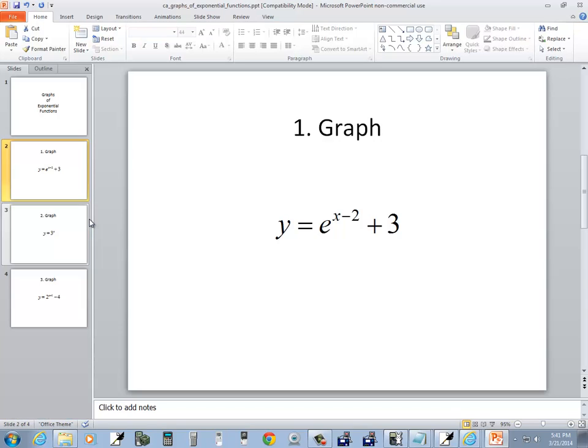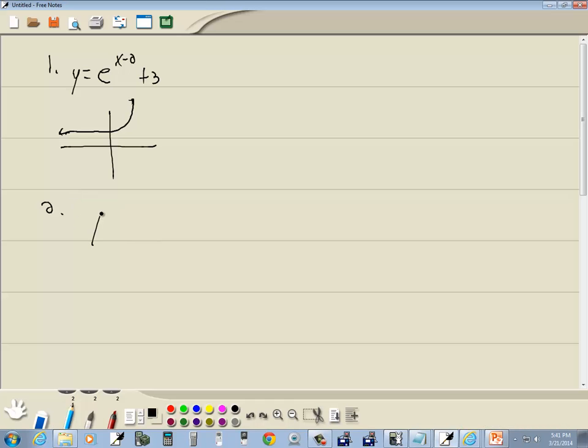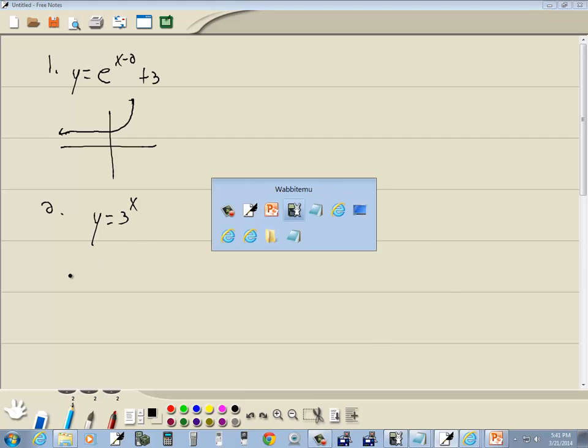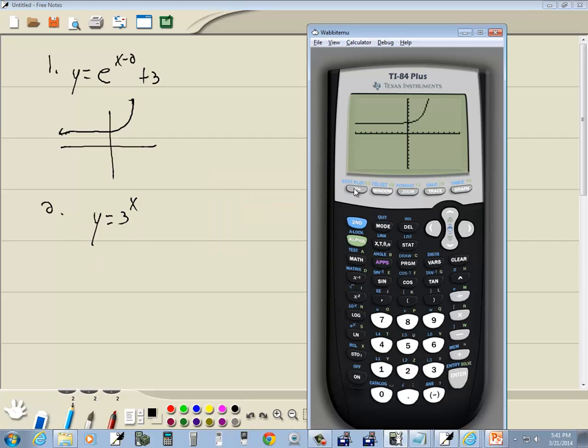Our second problem. y is equal to 3 to the x. And I'm going to press my y equals, press clear to clear out what's there. I'll do 3, and how you always do an exponent, it's a caret, and then we'll put an x. And then I'll press graph.